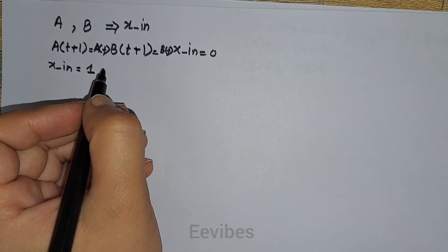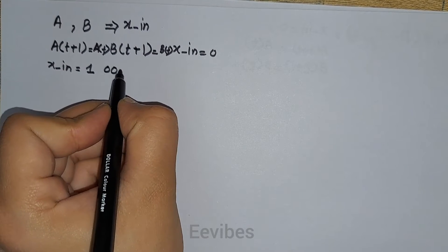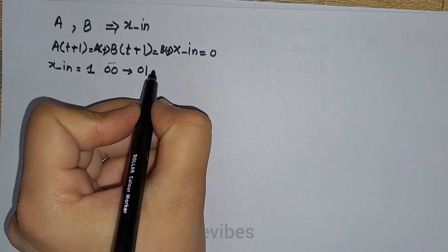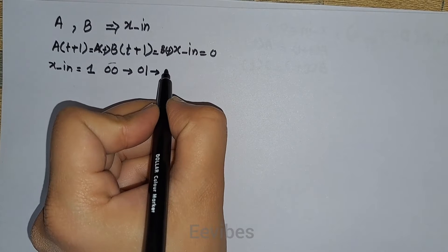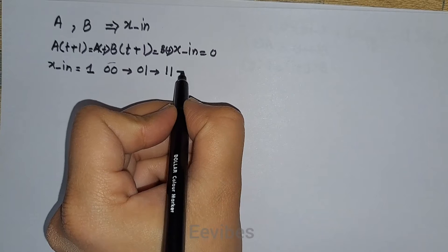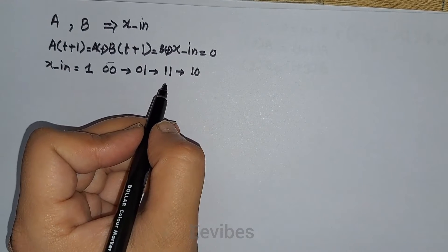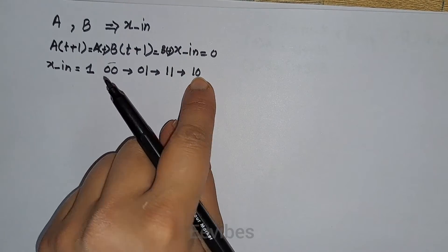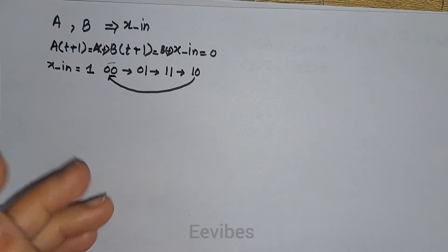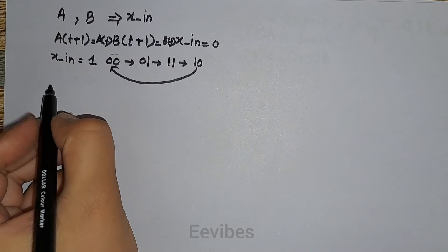When the input x is equal to one, the transitions will be as follows: from state 00 they will go to 01, from 01 they will go to 11, from 11 they will go to 10, and finally from 10 they will go back to 00. This is the condition that is given.